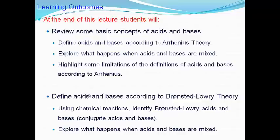At the end of this lecture, students will review some of the very basic concepts of acids and bases — particularly defining acids and bases according to Arrhenius Theory, the first proposed theory, then exploring what happens when acids and bases are mixed, and highlighting some of the limitations of Arrhenius' definitions. We will then turn our attention to defining acids and bases according to Bronsted and Lowry, identifying Bronsted-Lowry acids, bases, conjugate acids and bases, and exploring what happens when acids and bases are mixed.